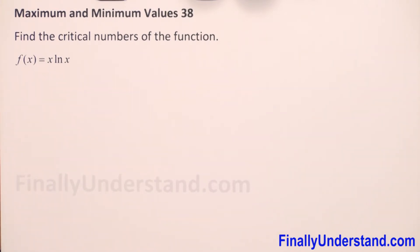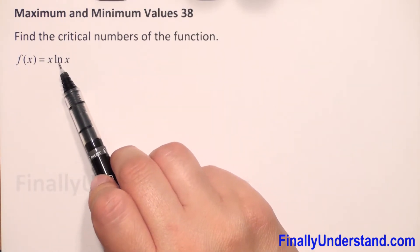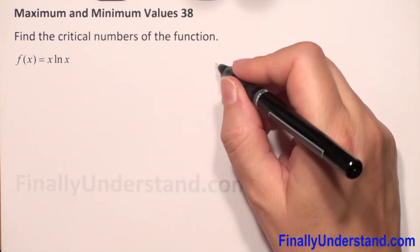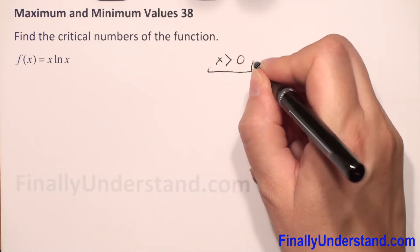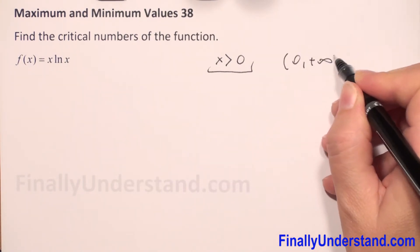First we need the domain of our function. We have multiplication here and we have natural log. We know that we calculate log for positive numbers, so x is greater than 0. This is our domain. This is the interval from 0 to positive infinity.